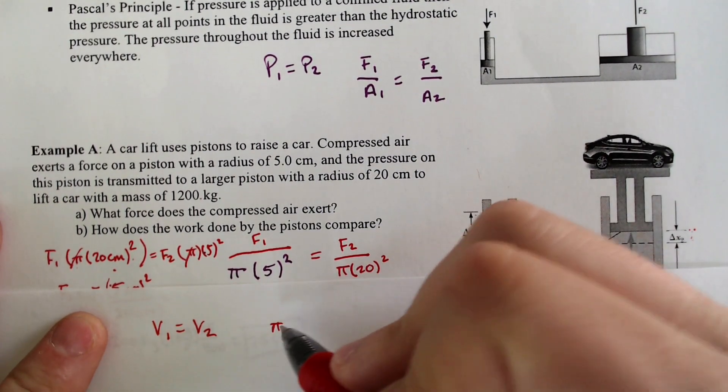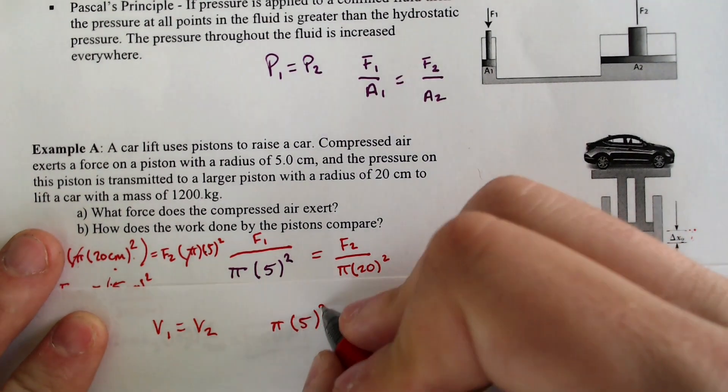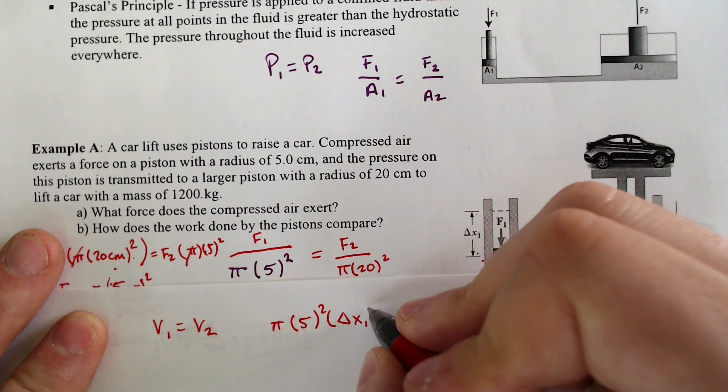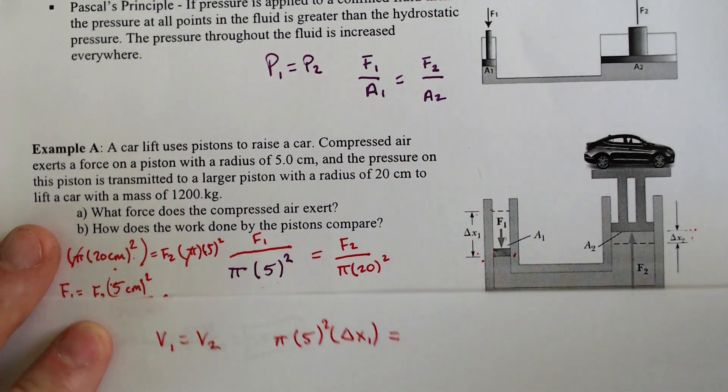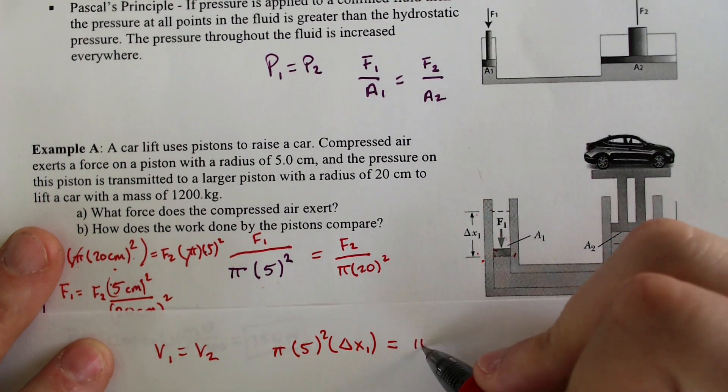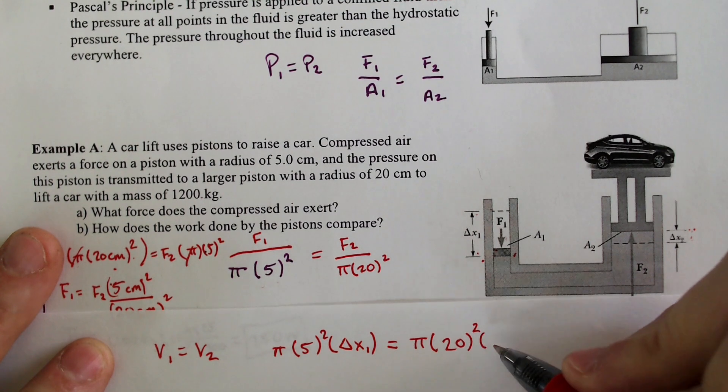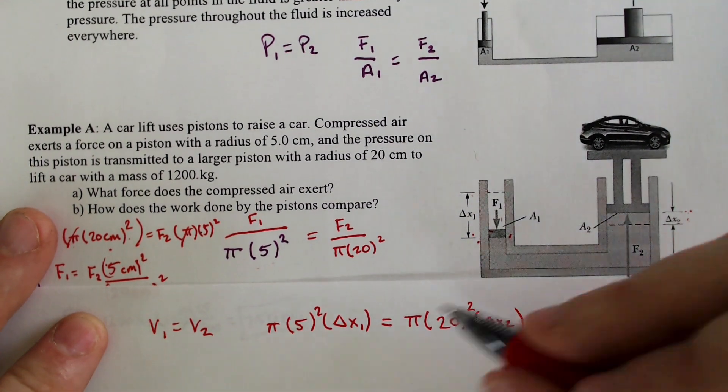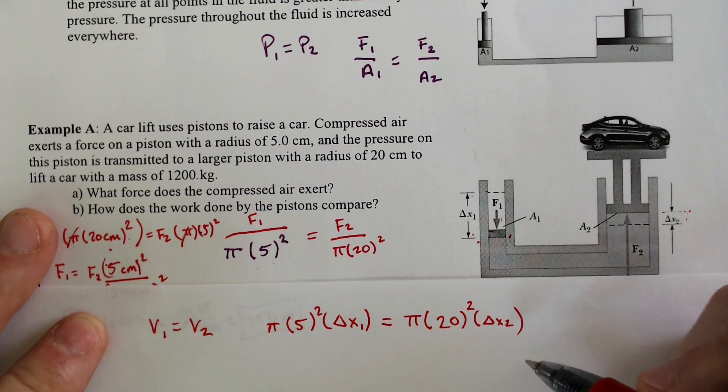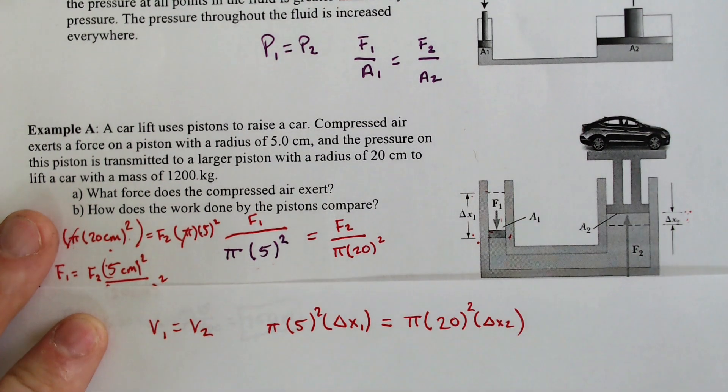We know volume of a cylinder is pi r squared times height. Pi and r are provided squared times the height. We're going to call that delta x1. We don't know that. And we know that the volume of the other one will equal pi times the radius of that is 20 squared times delta x2.